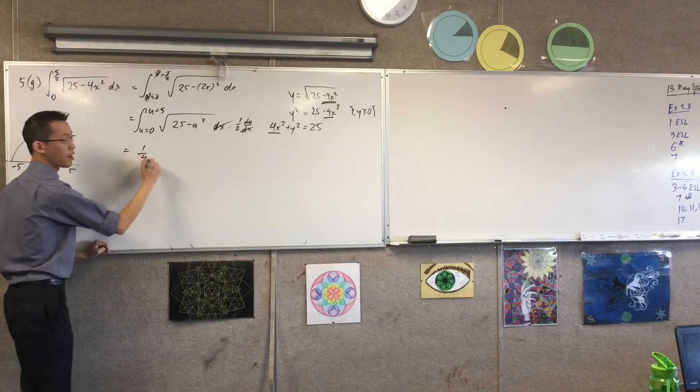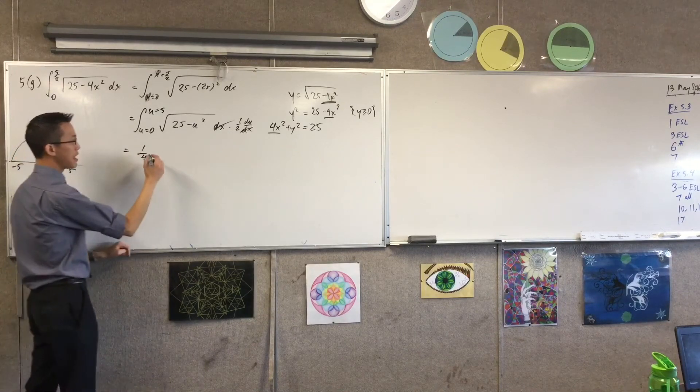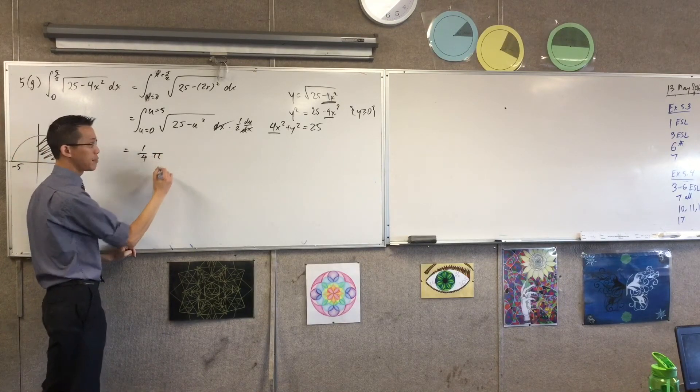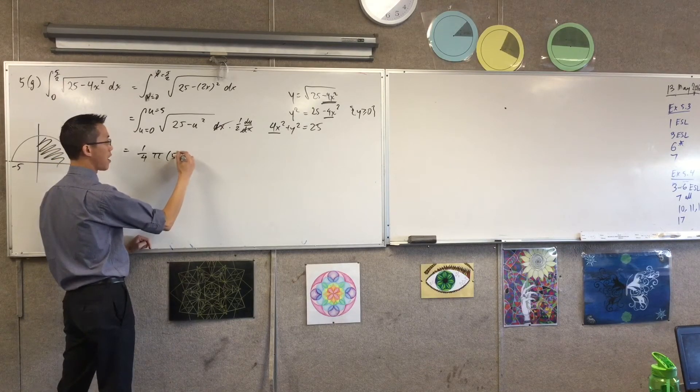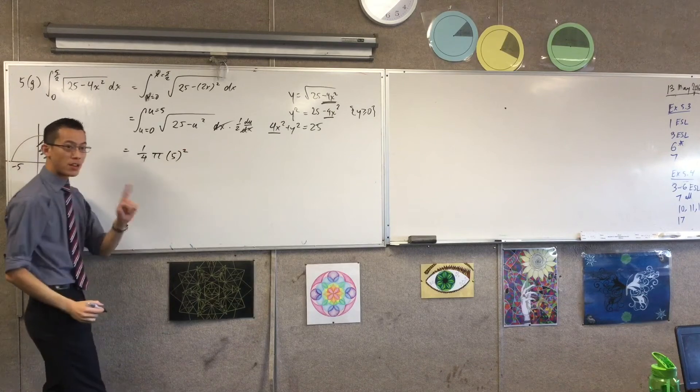So I'm getting a quadrant, which is a quarter of a circle, right? The area of a circle is pi times the radius squared, right? Which in this case is 5 squared. But don't forget,